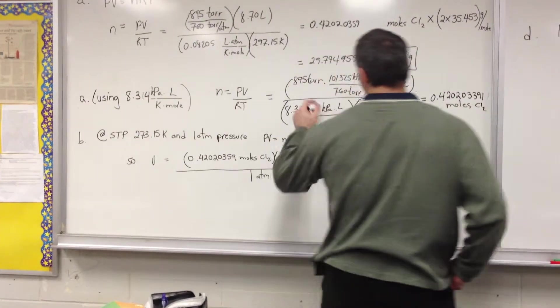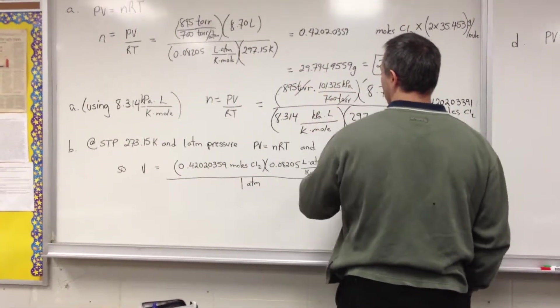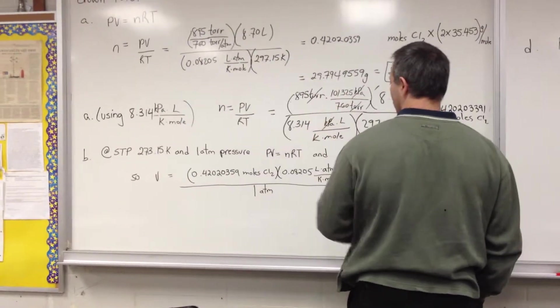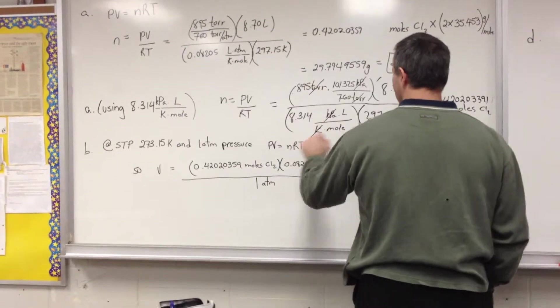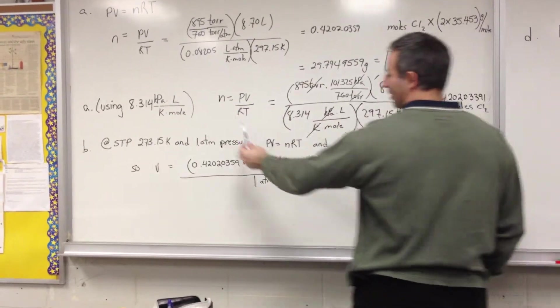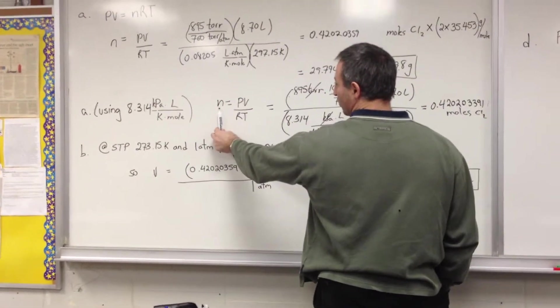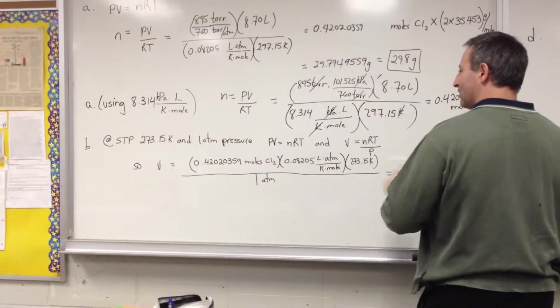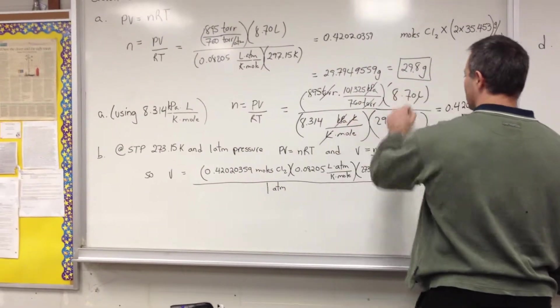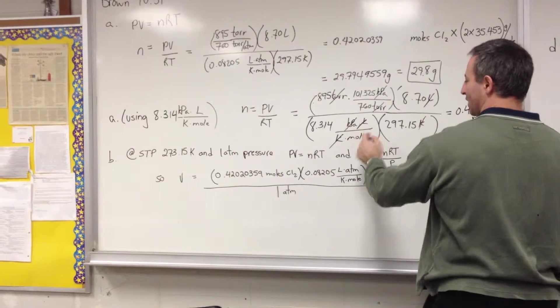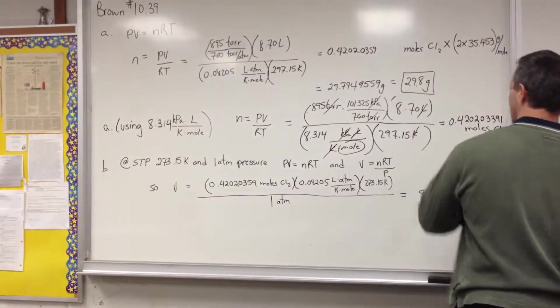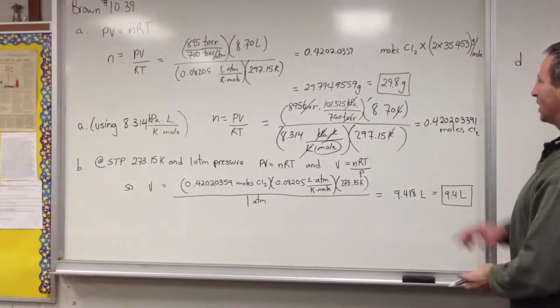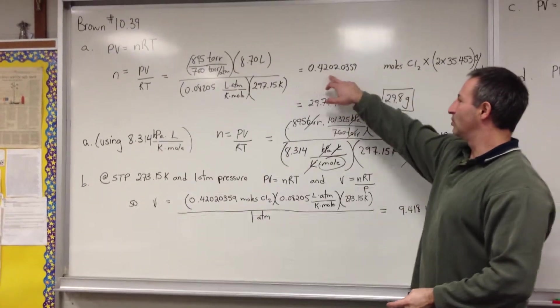When you're solving these things, you should check your units to make sure everything cancels out properly. Kilopascals should cancel kilopascals. Kelvins should cancel the Kelvin. Here you're solving for n. So you should end up with only moles in the final answer. Everything else should cancel - the liters cancel the liters. So the final thing that's left is moles. And your answer has to be moles. Notice how you get the same answer, 0.4202.